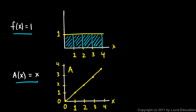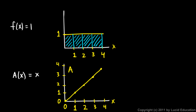This function f is the derivative of this function A. What's the derivative of x? It's 1. So if the derivative of my area function is f, that means the anti-derivative of f is my area function. I'll say that again because that is key: if the derivative of my area function is f, then the anti-derivative of f is my area function.